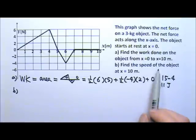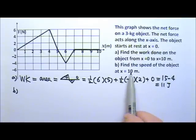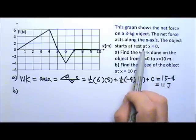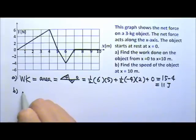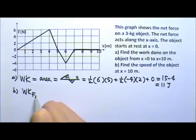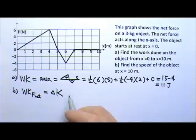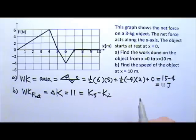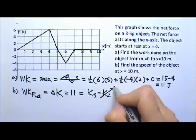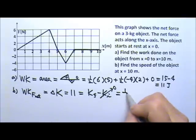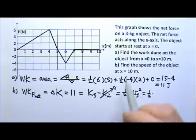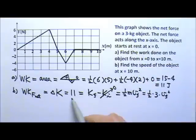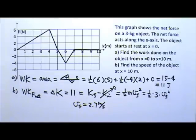For part B, we want the speed at x = 10 m, knowing the object started at rest. Using the work-energy theorem: W_net = ΔKE = K_f − K_i. Since initial KE is zero, 11 = ½mv_f². With mass = 3 kg: 11 = ½(3)v_f², so v_f = 2.7 meters per second.